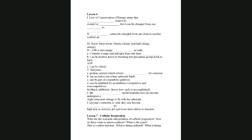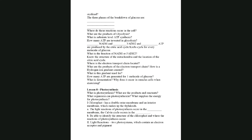The three phases of glucose breakdown are: glycolysis, the citric acid cycle (also called the Krebs cycle), and the electron transport chain (also called oxidative phosphorylation). Glycolysis occurs in the cytoplasm; the rest of the process occurs in the mitochondria. The carbon-containing product of glycolysis is two pyruvates. We also get two ATP and two NADH — electron carriers that accept electrons from glucose bonds as glucose is broken down.